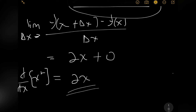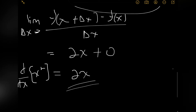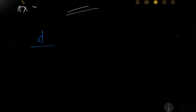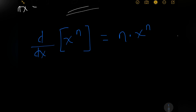So now we know that the derivative of x squared is equal to 2x. We don't always have to use first principles to differentiate. We can use other rules that are a lot easier, and one such rule is what we call the power rule. The power rule says that the derivative of x to the n is equal to n times x to the n minus 1.